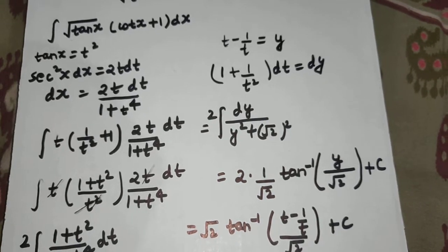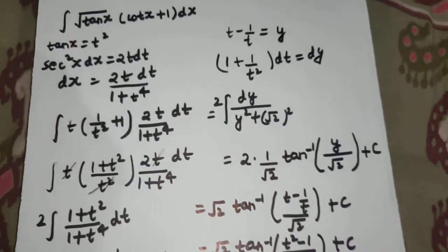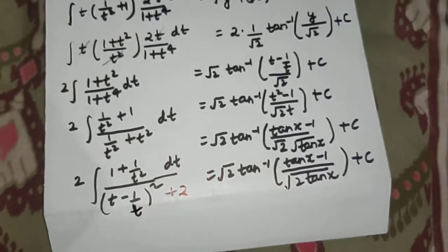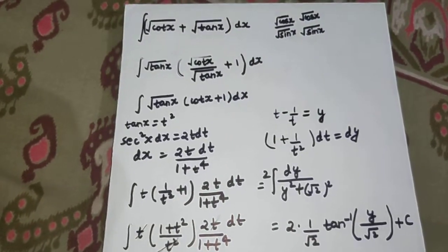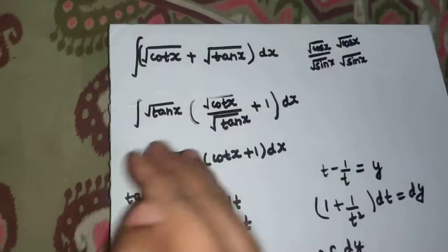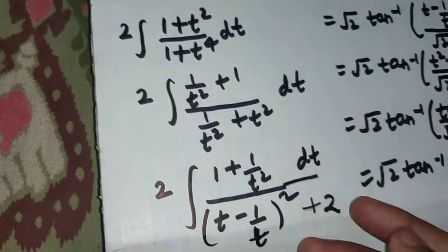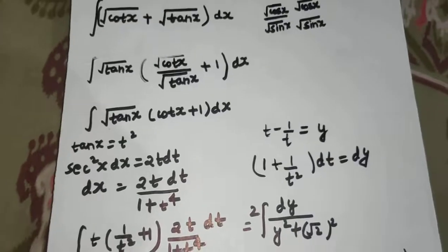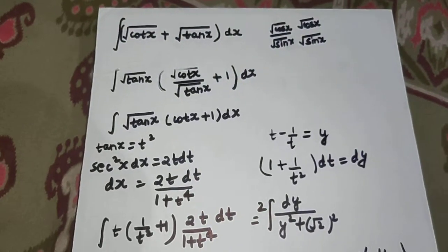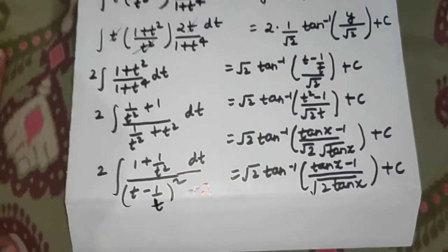Then came the most important step: taking (t − 1/t) as another variable y. We used the formula ∫ dx / (x² + a²) = (1/a) tan⁻¹(x/a) and then back-substituted. The two most important steps were: taking √(tan x) out, and restructuring the denominator so that you can substitute t − 1/t = y. Hope you understood — see you with Method 2 for the same problem. Thanks and have a nice day!